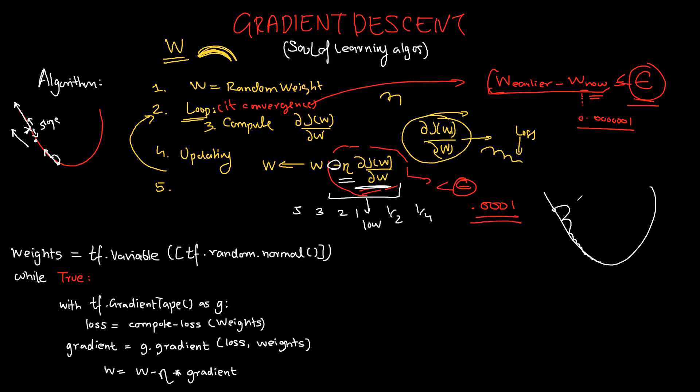The actual phenomenon will happen something like this - we will be moving towards the minima. Once I have reached a point where the difference between the last step and this step is not so much, I will stop. That is exactly what gradient descent is, nothing else.